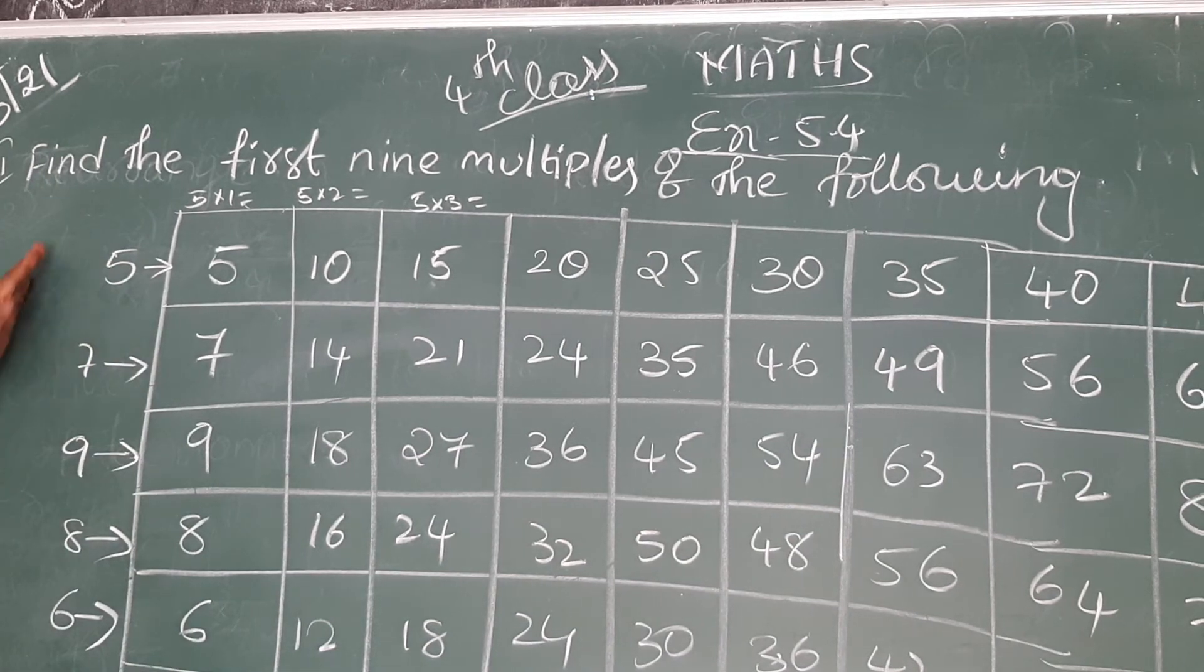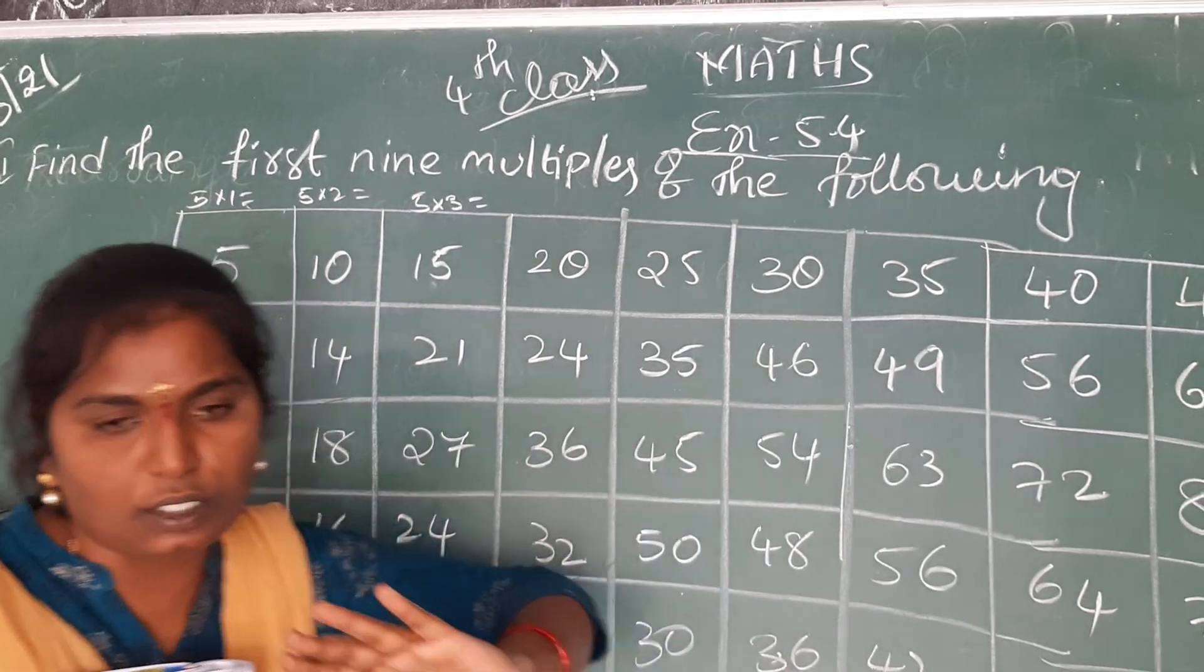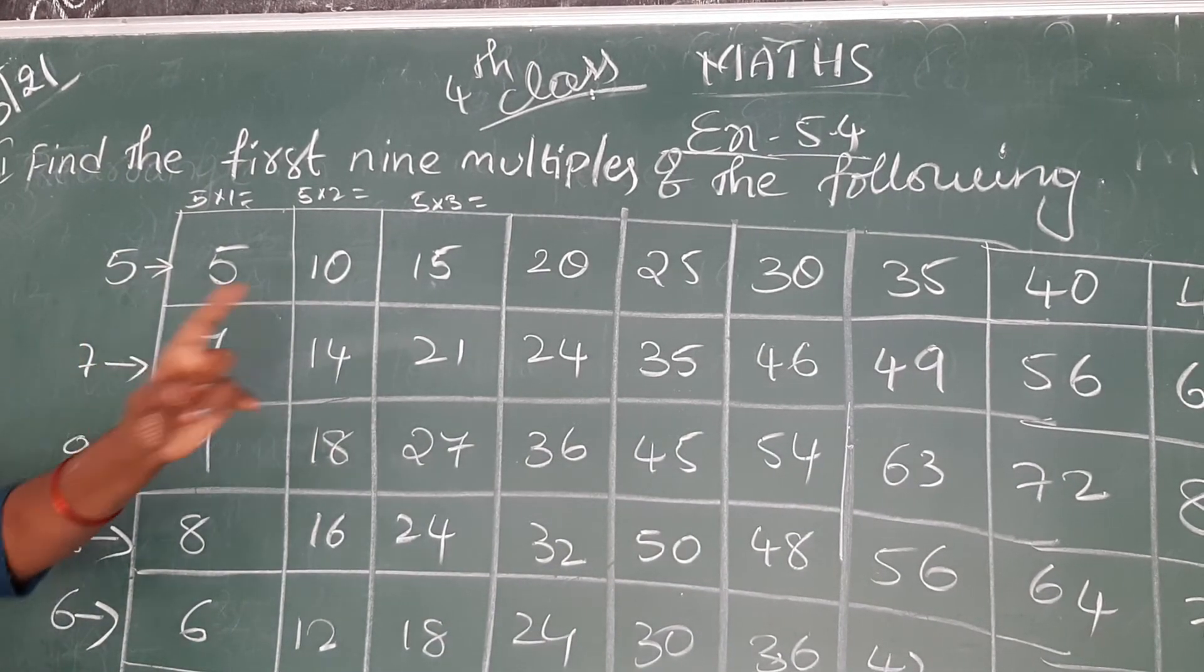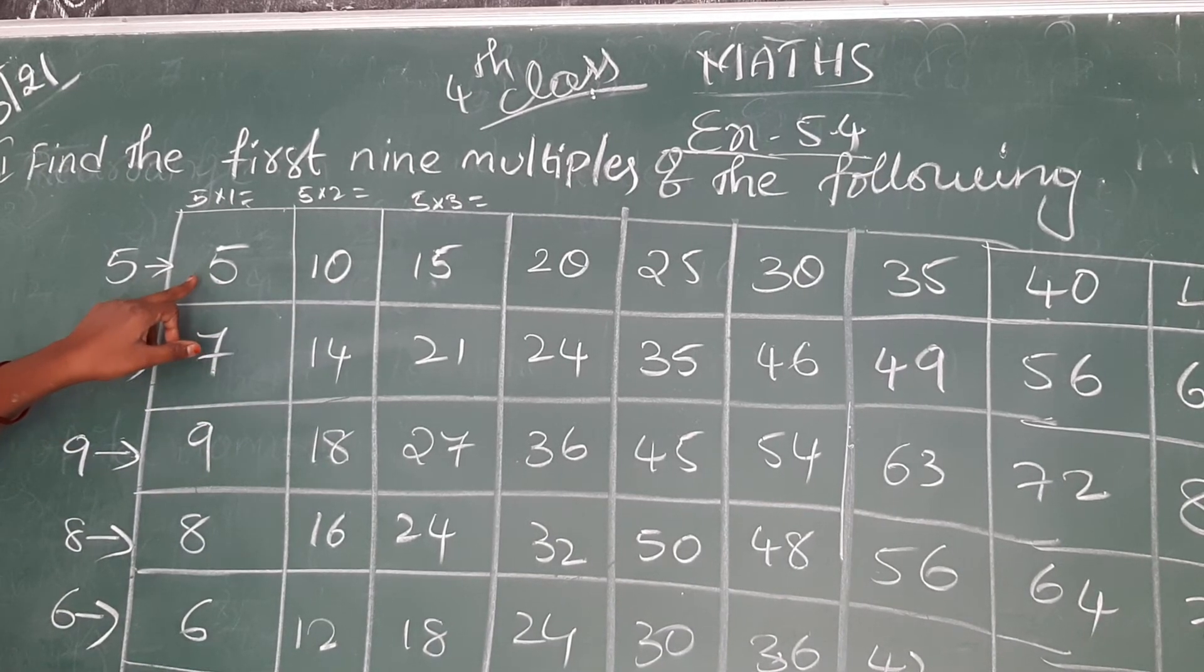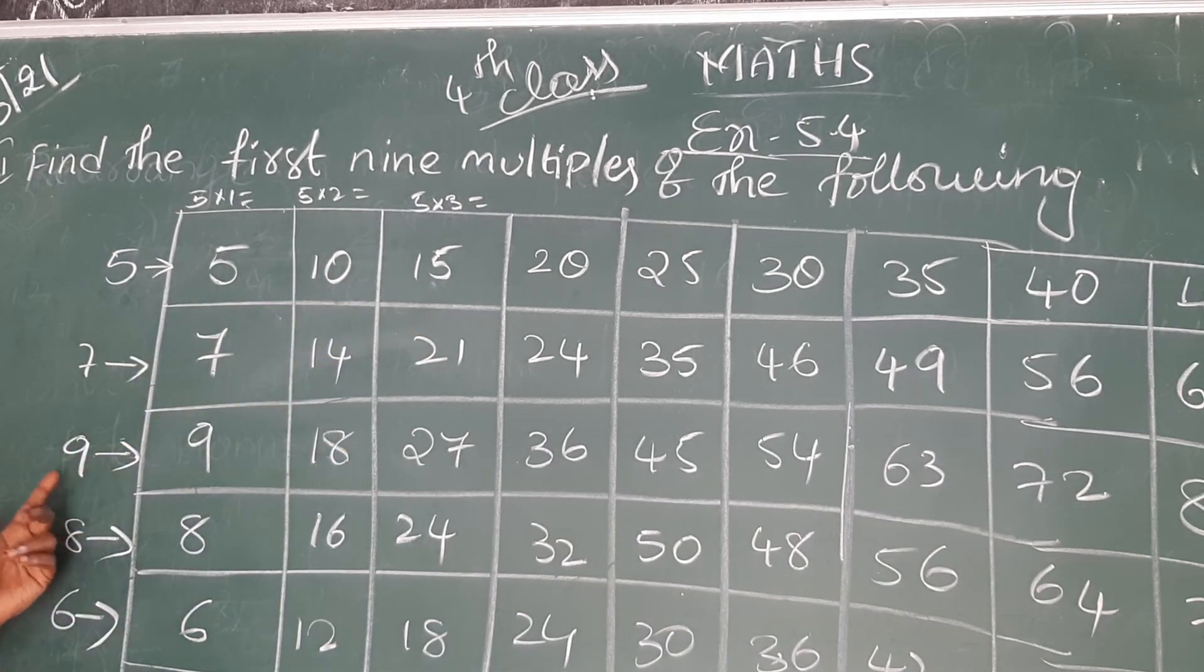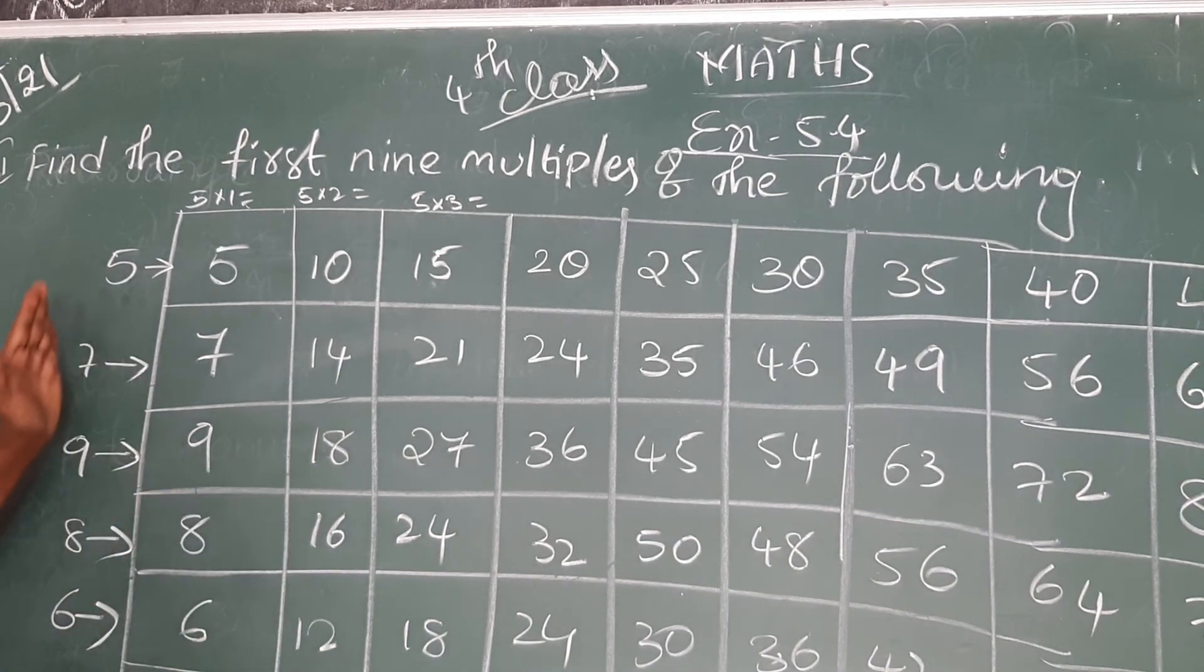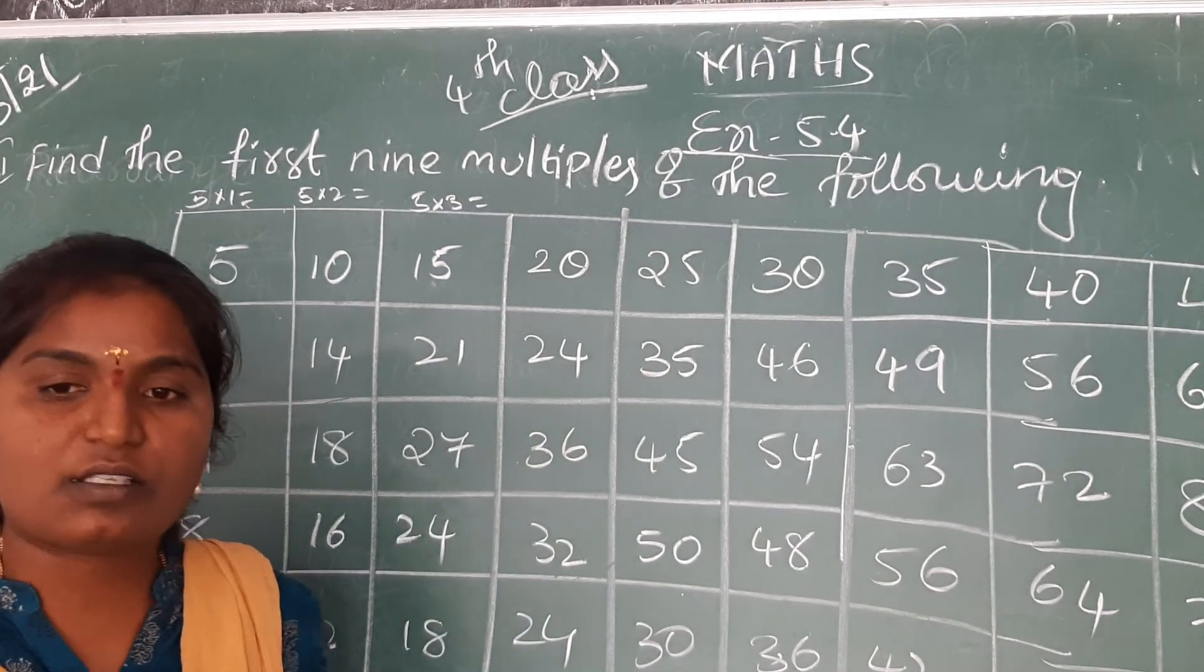Here given numbers tables up to 9, you have to write in this table. 5 table, next 7 is the table, next 9 is the table, next 8 is the table, next 6 table, and complete 3s, okay?